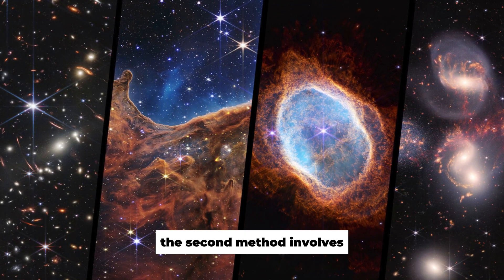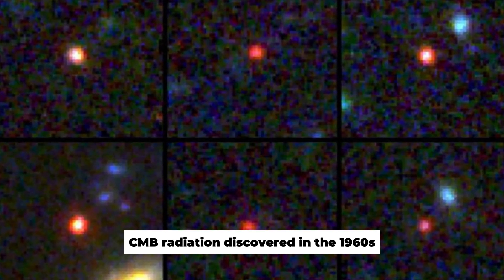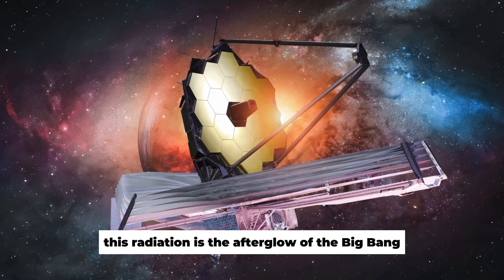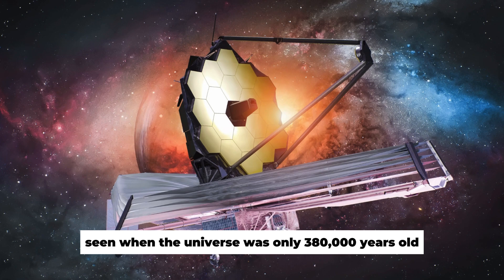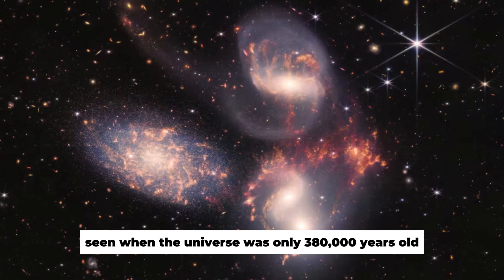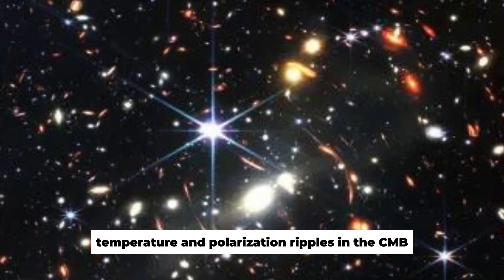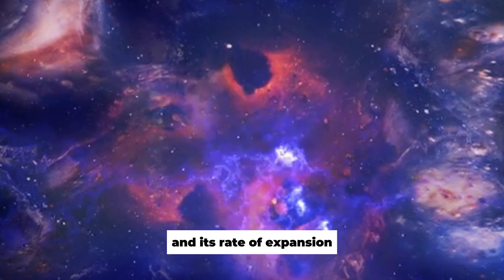The second method involves measuring the early universe's cosmic microwave background, CMB radiation, discovered in the 1960s. This radiation is the afterglow of the Big Bang, seen when the universe was only 380,000 years old. By analyzing the tiny temperature and polarization ripples in the CMB, astronomers can determine the age of the universe and its rate of expansion.